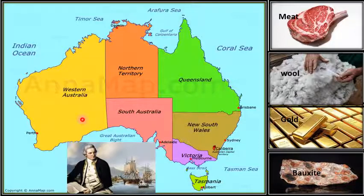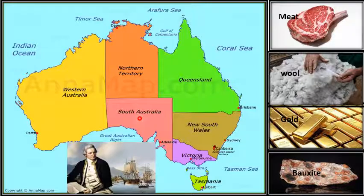Most of the people in Australia live in the southeast or southwest because the climate, although warm, is still comfortable for life. The northwestern part has a huge rainforest region, while the central part is a harsh desert. Being a country as well as a continent, Australia is the sixth biggest country and the smallest continent in the world.